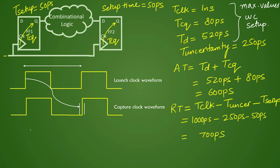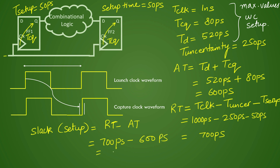Now let us calculate the slack. Setup slack is calculated as required time minus arrival time, and required time should be greater than arrival time for no violation. Required time is 700 picoseconds and arrival time is 600 picoseconds. So you have a substantial positive slack — please do let us know in the comment section how many of you got a slack of 100 picoseconds as the answer.